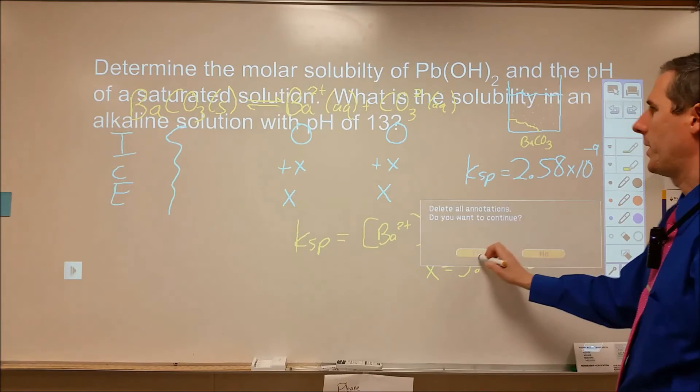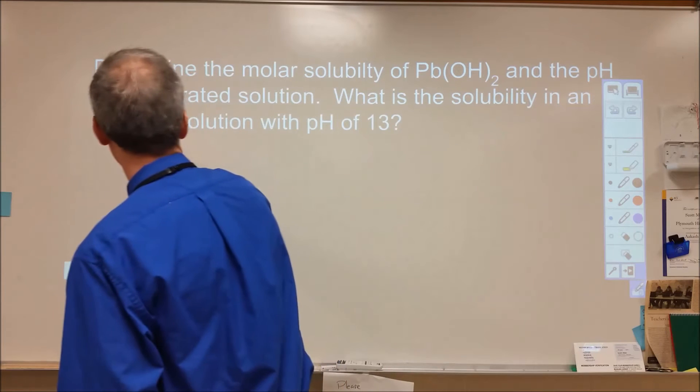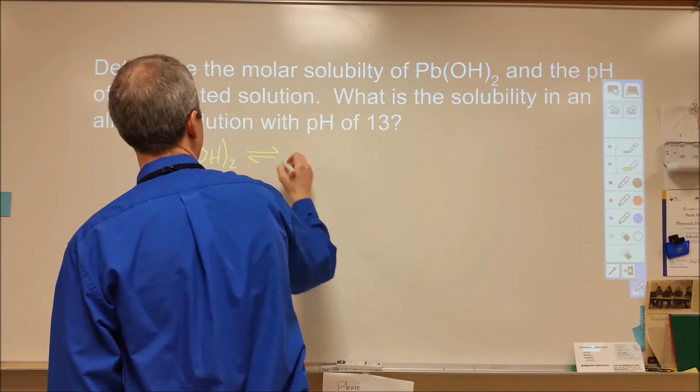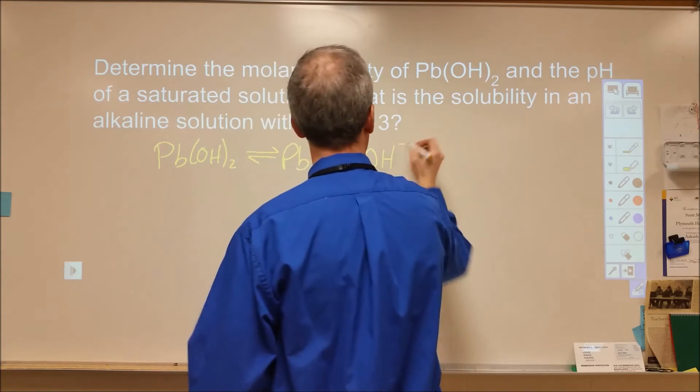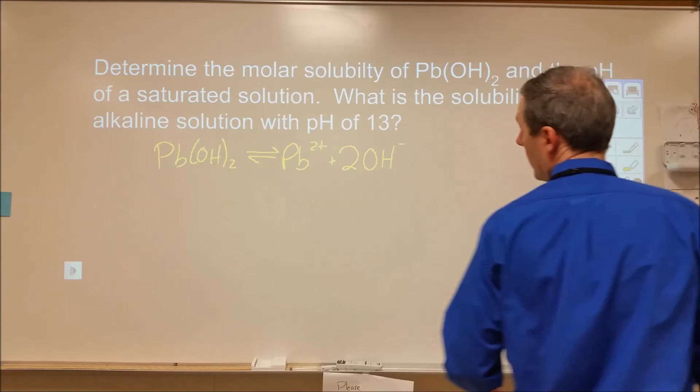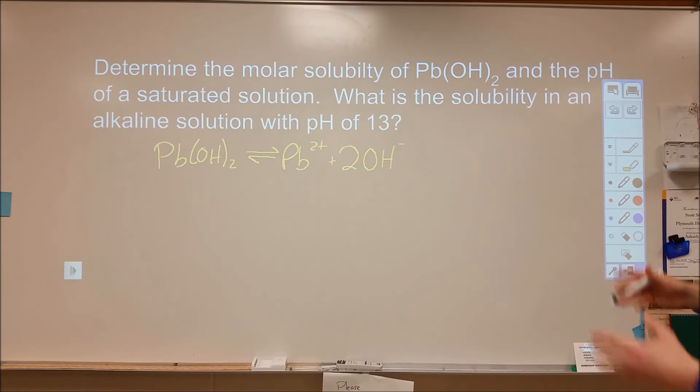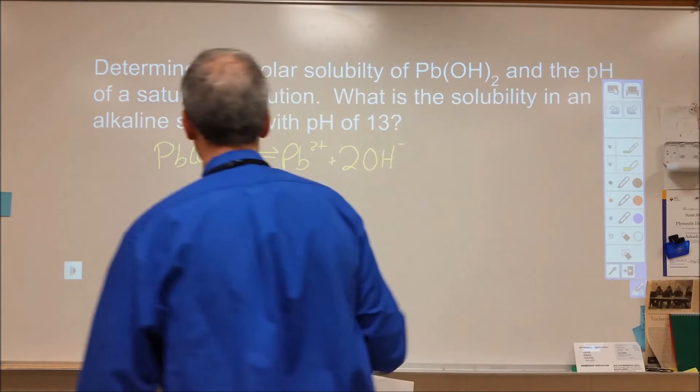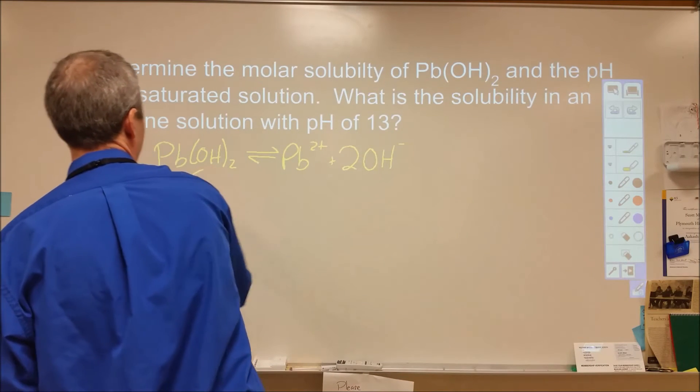Here we're looking at lead II hydroxide. Lead II hydroxide dissolving into water produces lead 2+ ions and 2 hydroxides per formula unit of lead hydroxide. We're looking at solid turning into aqueous ions. The question asks: what's the molar solubility of lead II hydroxide and the pH of a saturated solution? What's the solubility in an alkaline solution? So we have a second question. To start, we're going to look at dissolving in water. Set up our ICE chart. We're going to ignore our solid.